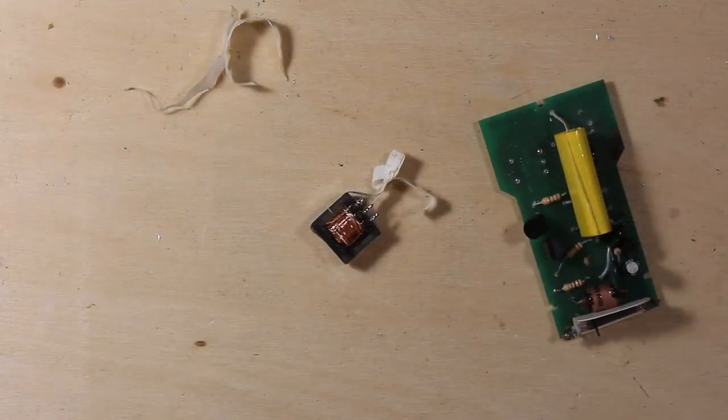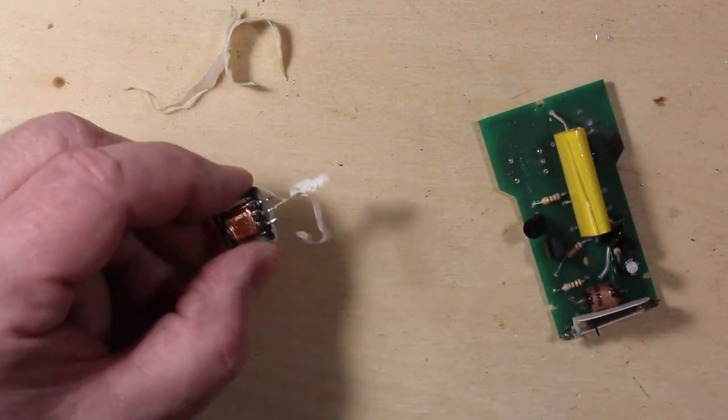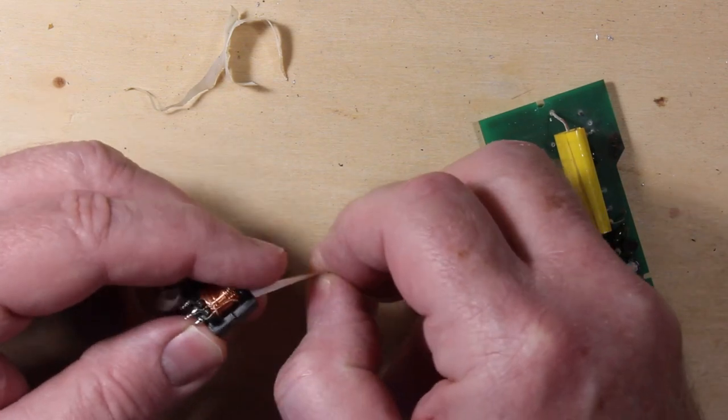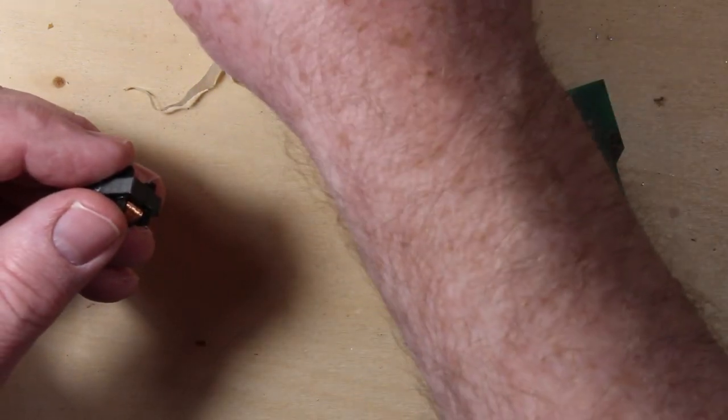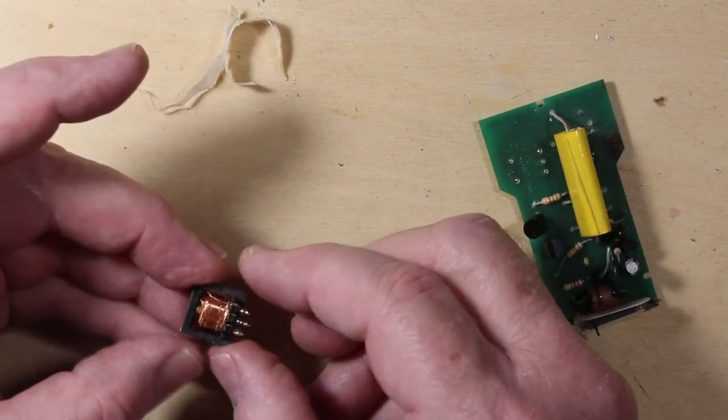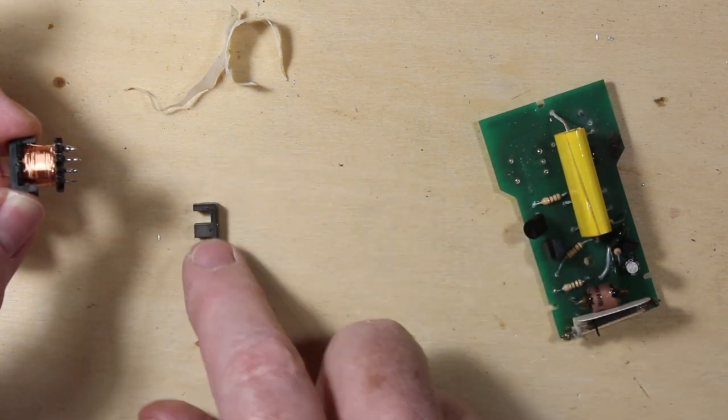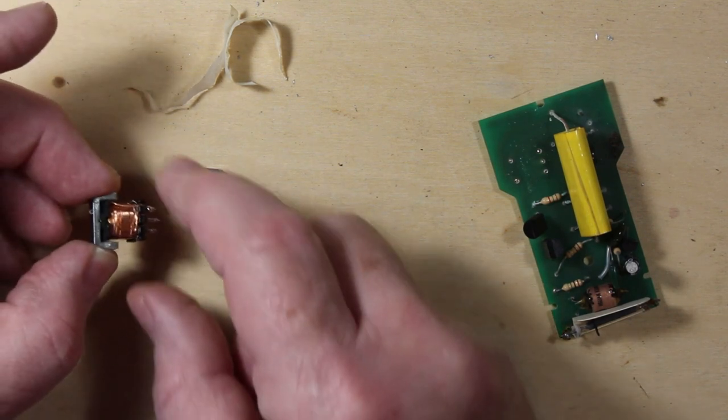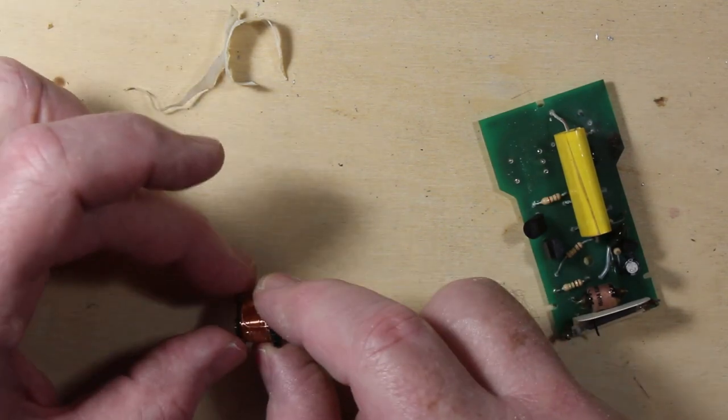I managed to get the transformer out of the PC board and got it unwrapped. It just wrapped in tape around the outside. These are two ferrite cores here, not steel, because it probably runs up at around a few kilohertz at least. I took the tape off and managed to get the core separated. You have to be really careful—this is ferrite, very brittle.